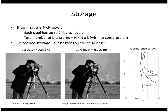We can reduce storage by reducing either spatial or gray level resolution, and either approach reduces the number of bits. Which one is better depends on the type of image. For a highly detailed image like a picture of a crowd, it would be better to reduce the number of bits and keep the spatial resolution. For an image with smoothly varying regions like a face, it would be better to reduce the spatial resolution and keep the number of bits.